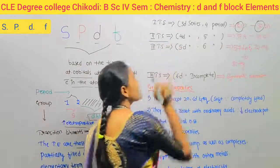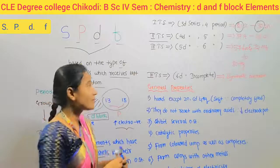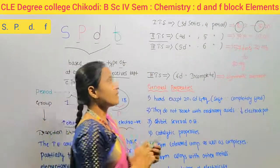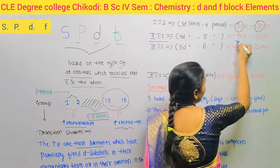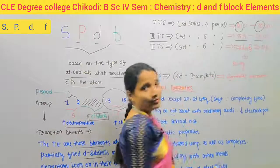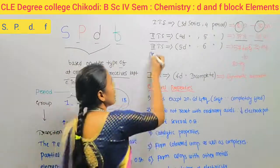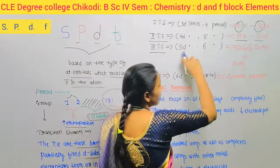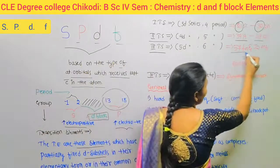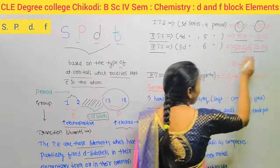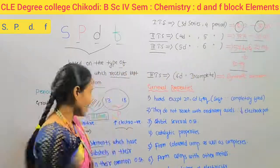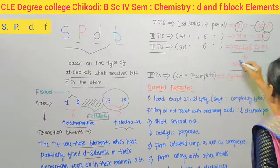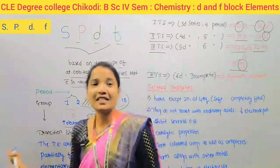The second transition series is the 4D series, belonging to the 5th period. It starts from atomic number 39 (yttrium) to 48 (cadmium). The third transition series is the 5D series, belonging to the 6th period, from 57 (lanthanum) and 72 (hafnium) to 80 (mercury). Zinc, cadmium, and mercury are not considered transition elements because they have completely filled orbitals.